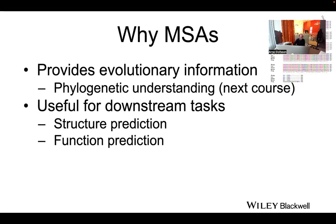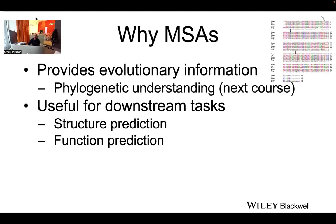So why do you want to do an MSA? The idea is that you want to use data for more than one sequence at a time to understand something. An MSA can provide evolutionary information — it's used if you want to calculate the phylogeny, how different genes or species are related to each other. You need a multiple sequence alignment to calculate distances between each pair of genes.